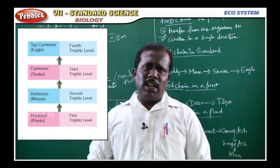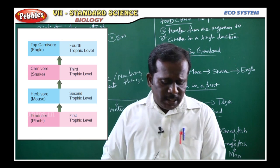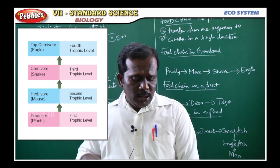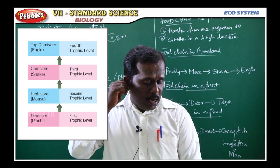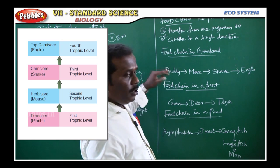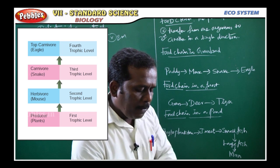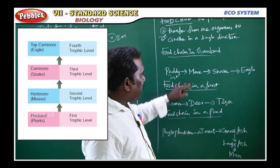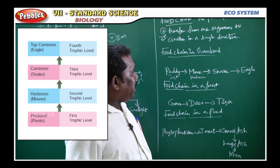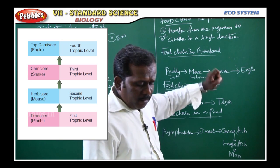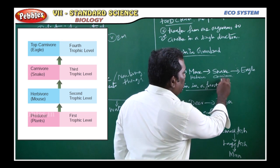Next — trophic level. Trophic level is similar to the food chain. In a food chain, each group of organisms occupies a particular position. The position of an organism in a food chain is called a trophic level. For example: paddy (plant) is the producer — this is the first trophic level. Mouse is a herbivore — this is the second trophic level. Snake is a carnivore (flesh-eating animal) — this is the third trophic level.